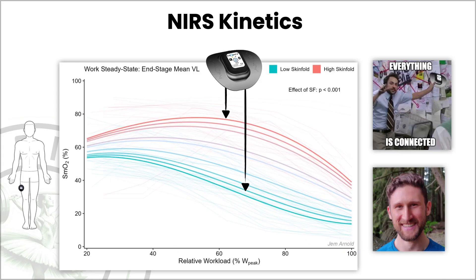One thing I've learned through my colleague Jim Arnold — a researcher who uses NIRS every single day in his lab with cyclists of different levels — is that you can actually determine whether somebody is limited by delivery or utilization just by looking at the Moxie trends, simply because your Moxie signal and the kinetics of the SMO2 are going to be directly linked to the depth of penetration of the light signal.